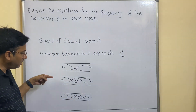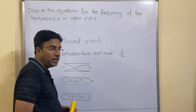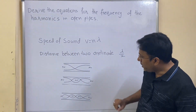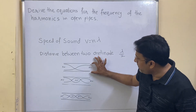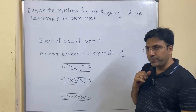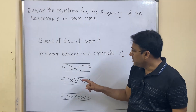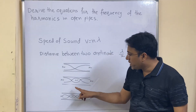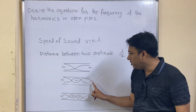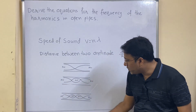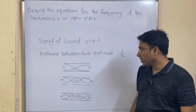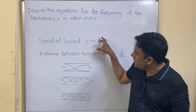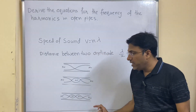These three diagrams are very important. If you understand these three diagrams, then the derivation will become very easy. I have drawn three pipes: first pipe, second pipe, and third pipe. In the first pipe, you can see only two antinodes. In the second pipe, you can see three antinodes. In the third pipe, you can see four antinodes. To derive these equations, you must know these two formulas and these three diagrams.